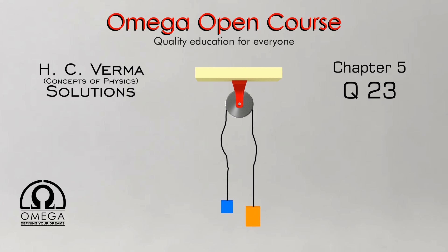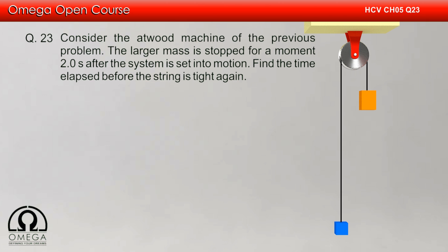H.C. Verma Chapter 5, Question number 23: Consider the Atwood machine of chapter 5, question number 22. The larger mass is stopped for a moment 2 seconds after the system is set into motion. Find the time elapsed before the string is tight again.